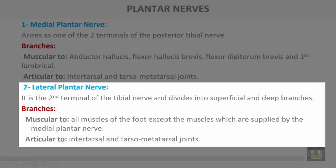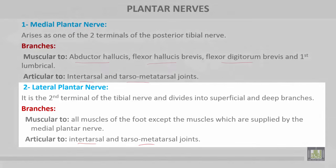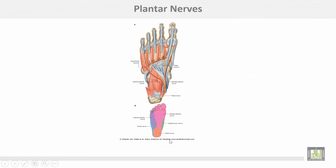Articular branches of the lateral plantar nerve also go to the intertarsal and tarsometatarsal joints. This shows the plantar nerves: the medial plantar nerve accompanies the medial plantar artery, and the lateral plantar nerve accompanies the lateral plantar artery, shown between the first and second layers of the foot.